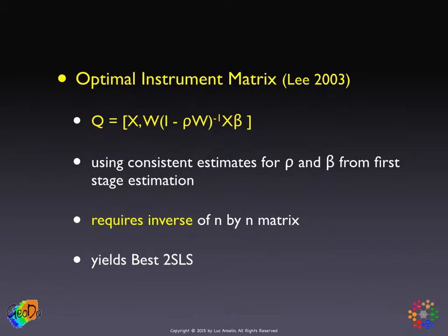This is the optimal instrument matrix. However, there is a catch: this optimal instrument matrix includes the parameters — it includes ρ and β.